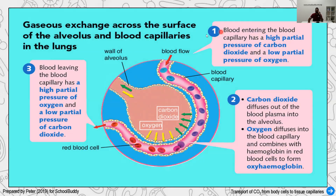Blood vessels carry red blood cells and capillaries to the alveoli. Blood coming from the body carries high carbon dioxide — shown in blue. When it reaches the capillaries near the alveolus, the carbon dioxide diffuses from the blood capillary into the alveolus. At the same time, inhaled oxygen enters the red blood cells and combines with hemoglobin to form oxyhemoglobin. This oxygen-rich blood then travels through the heart to all parts of the body.